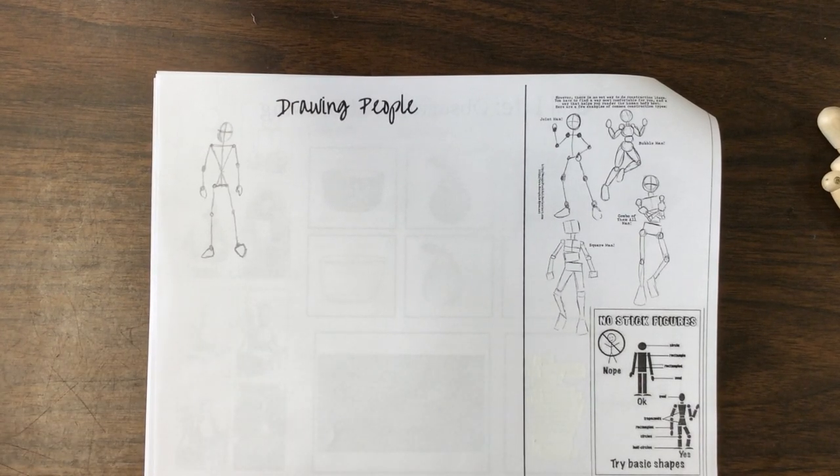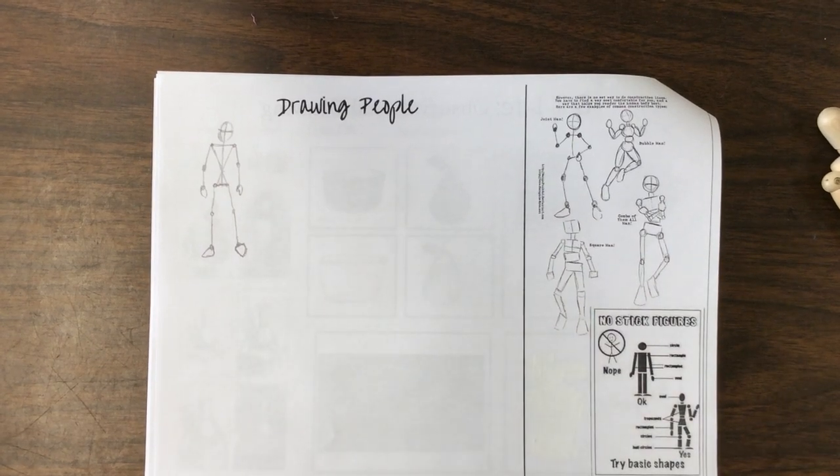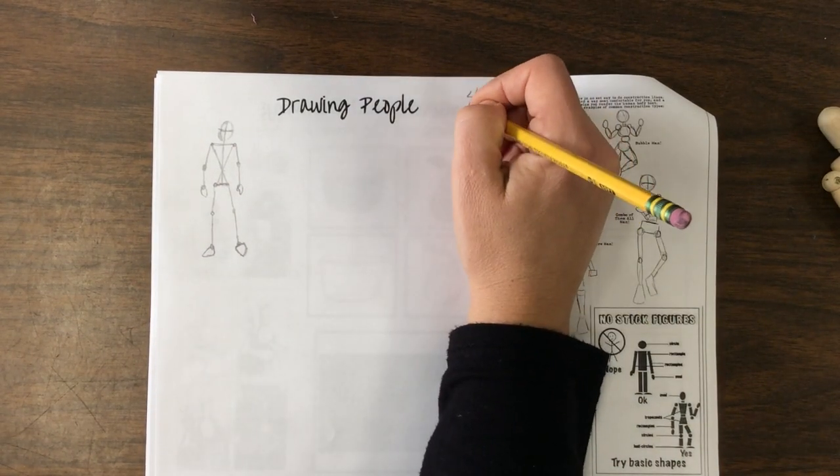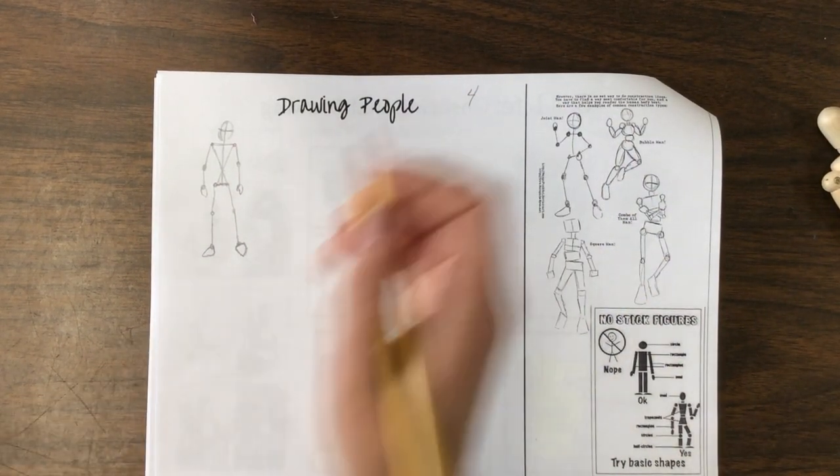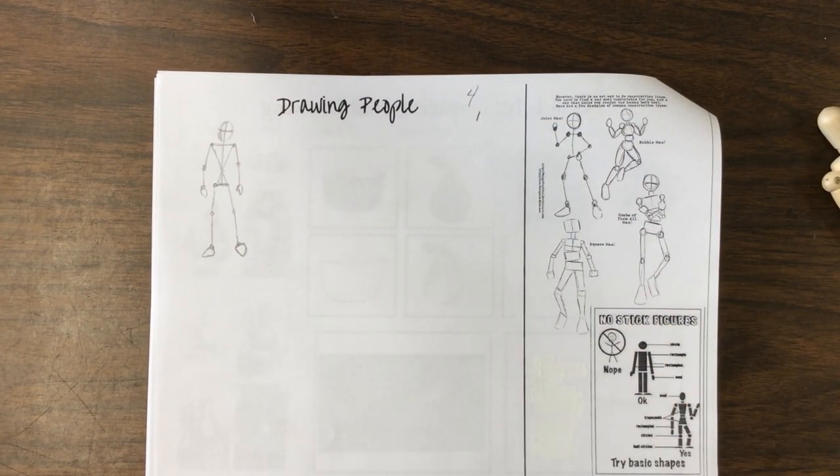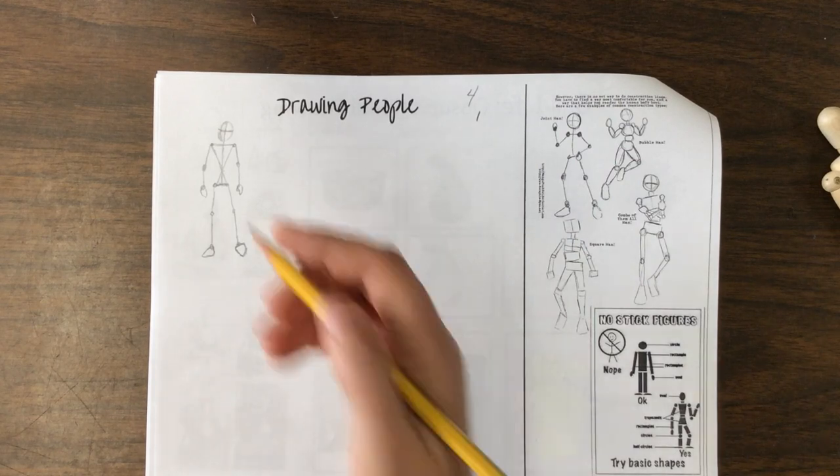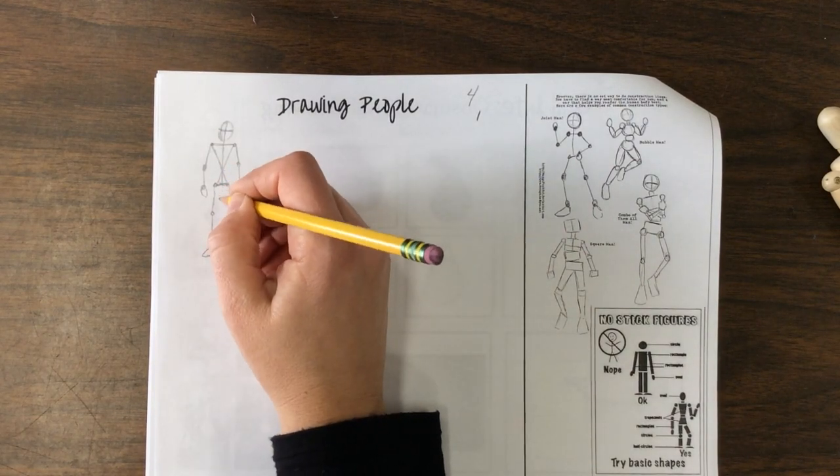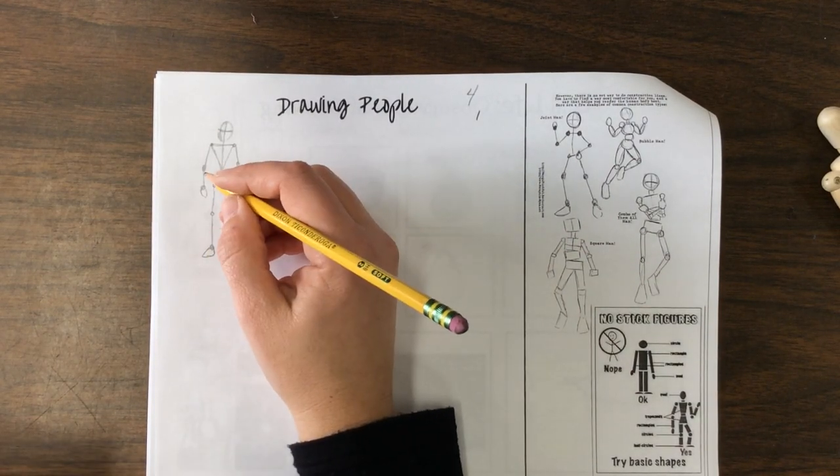So what we're going to do is I want you to draw them a couple of times. Let's say, let's do them four. On one of them, I want you to actually draw some clothes on them. Bulk them up. So, for example, this person. What do I want them to wear?